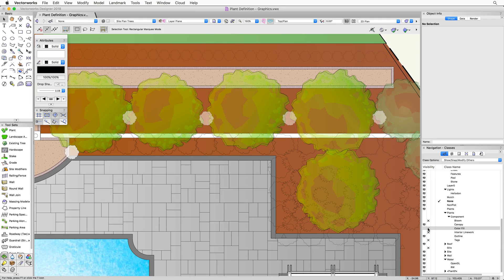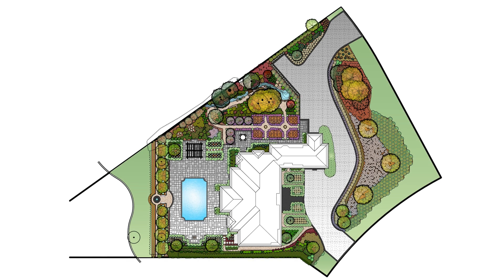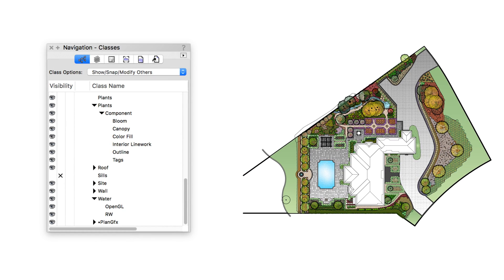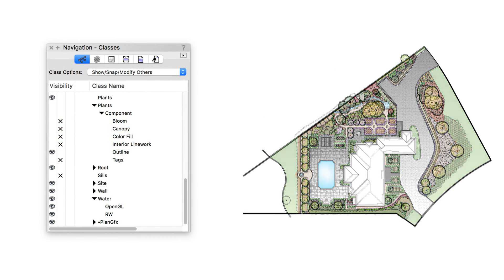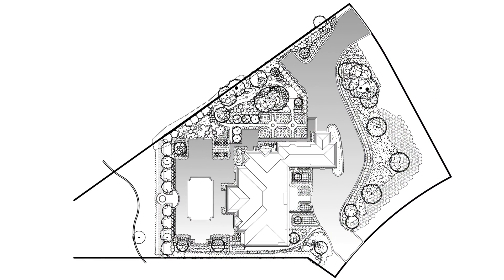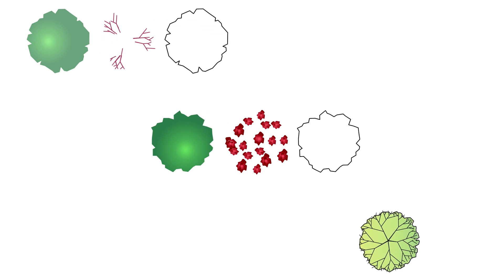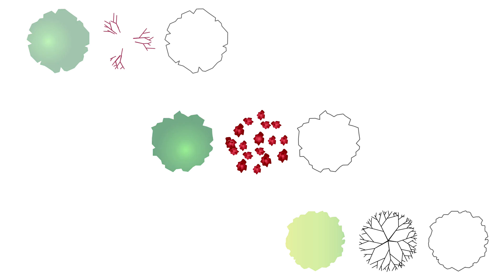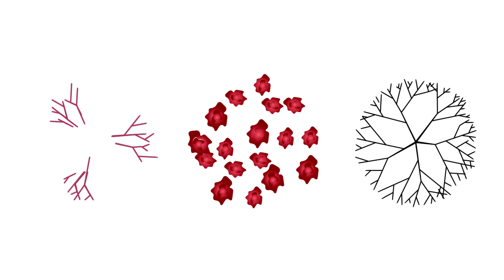A common example is when you need to send your design to an architect who only needs simple outlines. You would turn off all classes except the Plant Component Outline class to get a simple representation of your plants. Not all plants will use all of these classes — it depends on the type of plant. For example, you won't really need a canopy class for a shrub or ground cover. It's also possible to have more than one object in the same class, such as multiple objects in the bloom or interior linework classes. Classes are mainly for visibility control of those different parts.